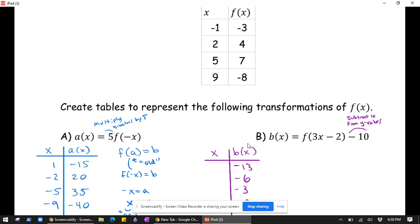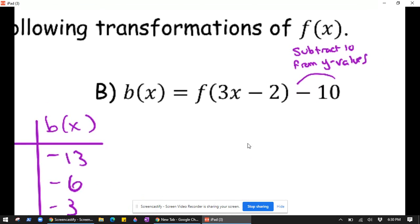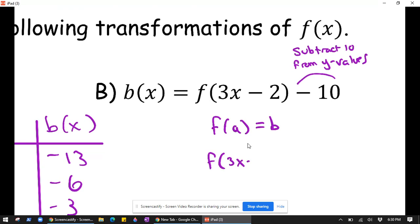What about x values? Well, I see this f of 3x minus 2. Again, if we know in general f of a equals b, a being our old x values, what we want is f of 3x minus 2 to also equal b.